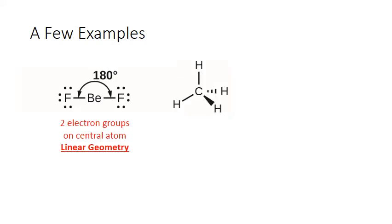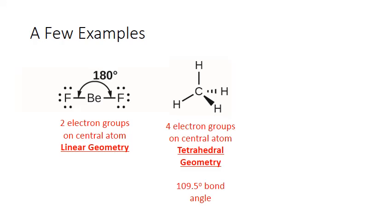Methane, or CH₄, is a classic example of a tetrahedrally shaped molecule. On the central carbon, there are four separate single bonds or electron groups, and they arrange themselves so that they are 109.5 degrees apart. To represent this in a two-dimensional drawing, two of the bonds are actually drawn as wedges extending out of the plane of the screen. The solid wedge is actually coming out towards you at an angle, while the dashed wedge is going back into the screen. The straight lines are considered to be in the plane of the screen itself.